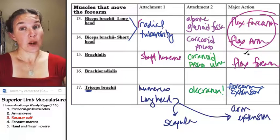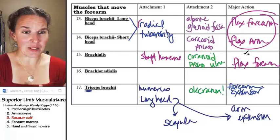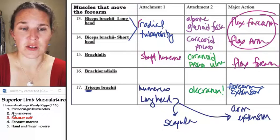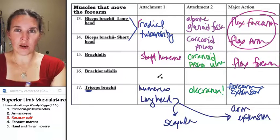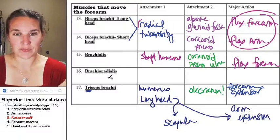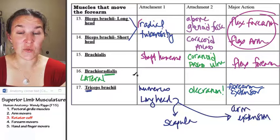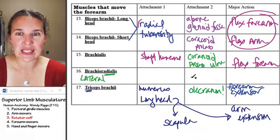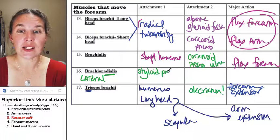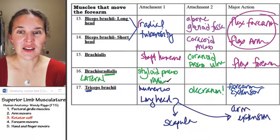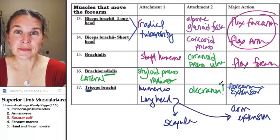Brachioradialis. Brachioradialis is clutch for making sure that you can identify the next set of muscles, which are all hand and finger movers. So brachioradialis, which side is it going to be on? Medial or lateral? Let's just be loud and in charge. It's lateral because it's on the radial side. And guess what one of its attachments is? The distal attachment is to the styloid process of the radius. That's why we had to know that one, you guys.